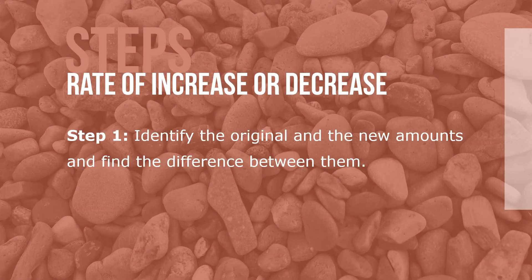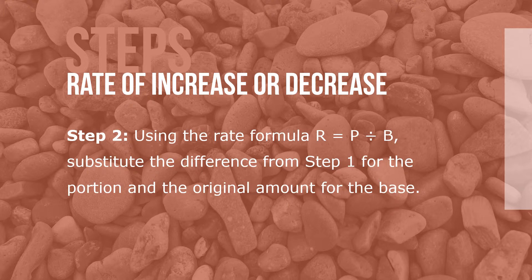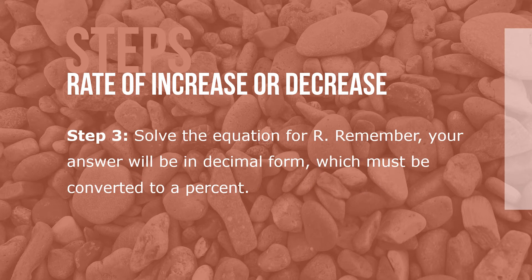Here are the steps for determining the rate of increase or decrease. Step 1: Identify the original and the new amounts and find the difference between them. Step 2: Using the rate formula r equals p divided by b, substitute the difference from Step 1 for the portion and the original amount for the base. Step 3: Solve the equation for r. Remember, your answer will be in decimal form, which must be converted to a percent.